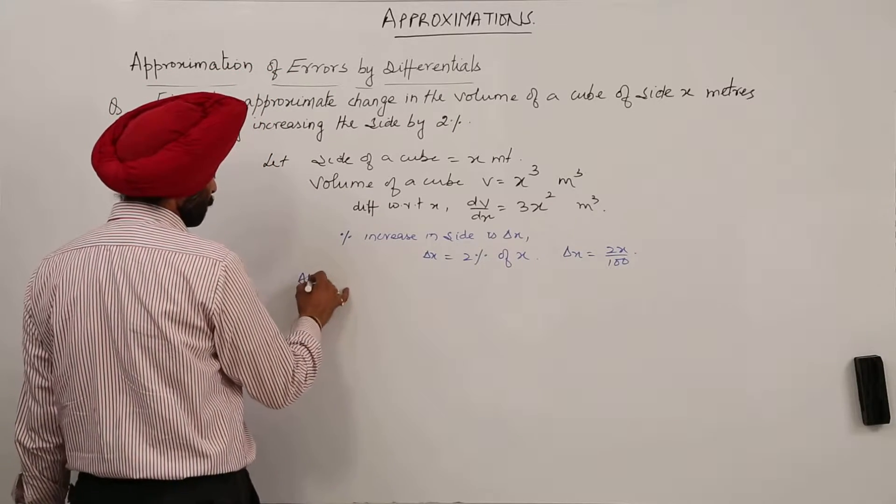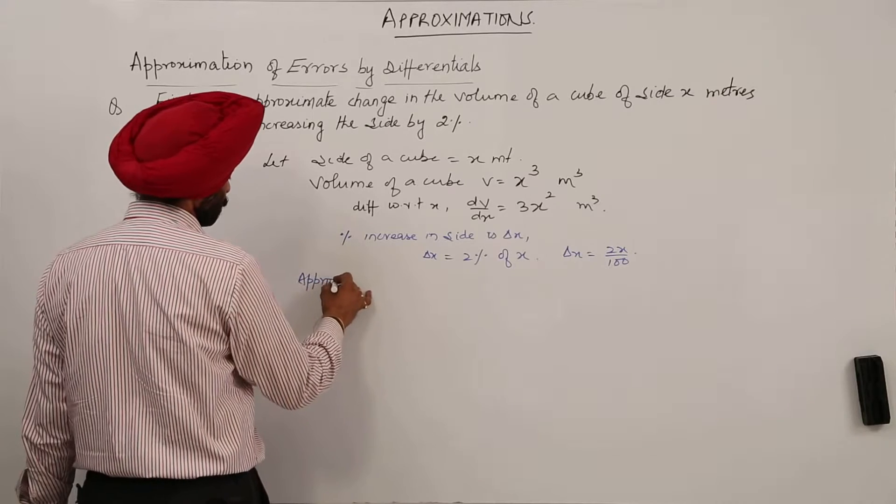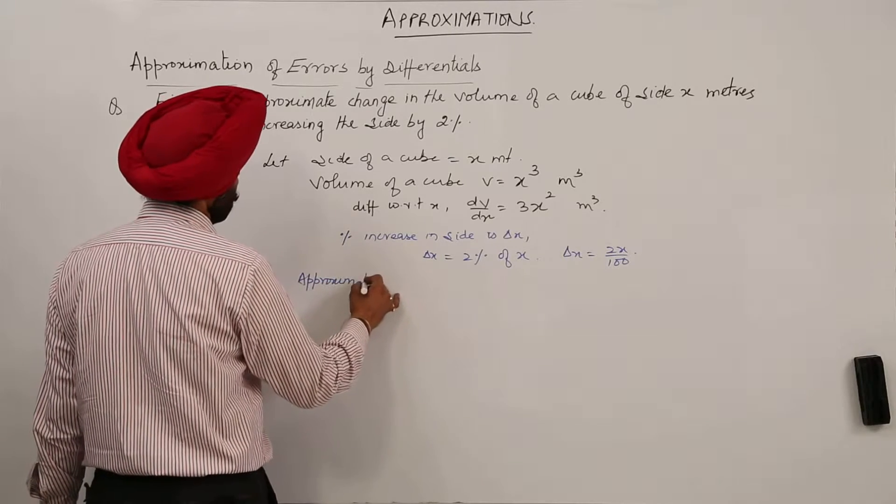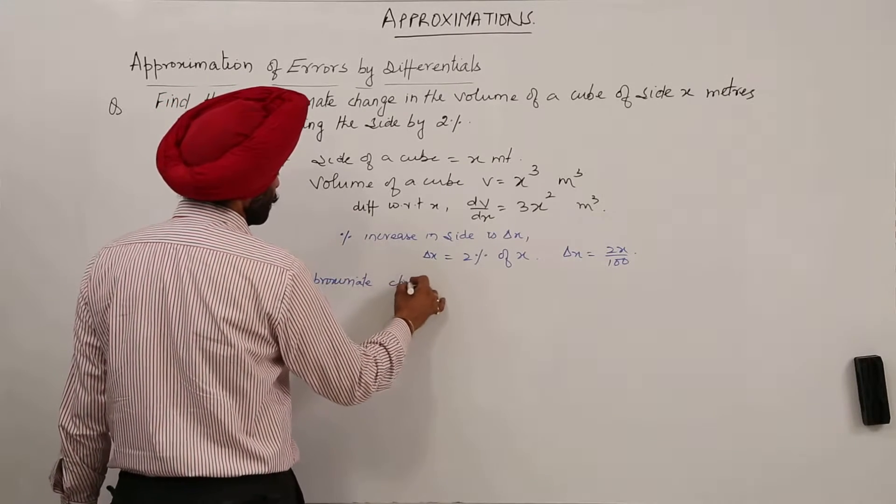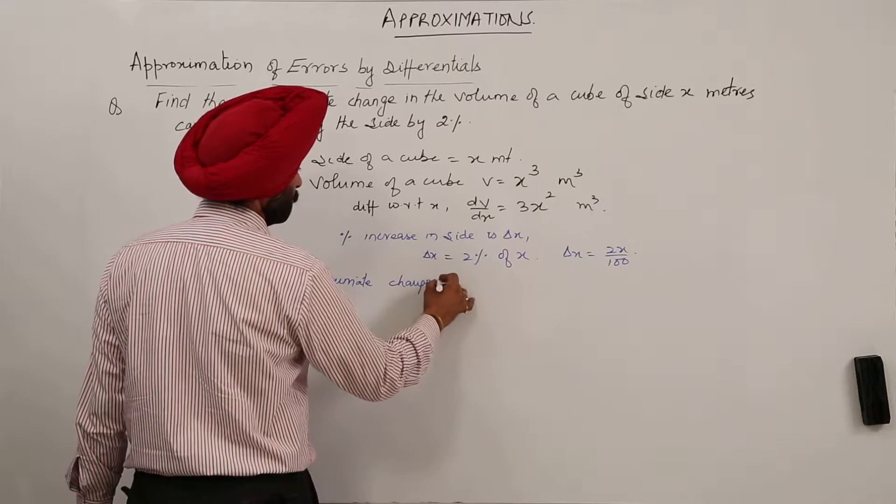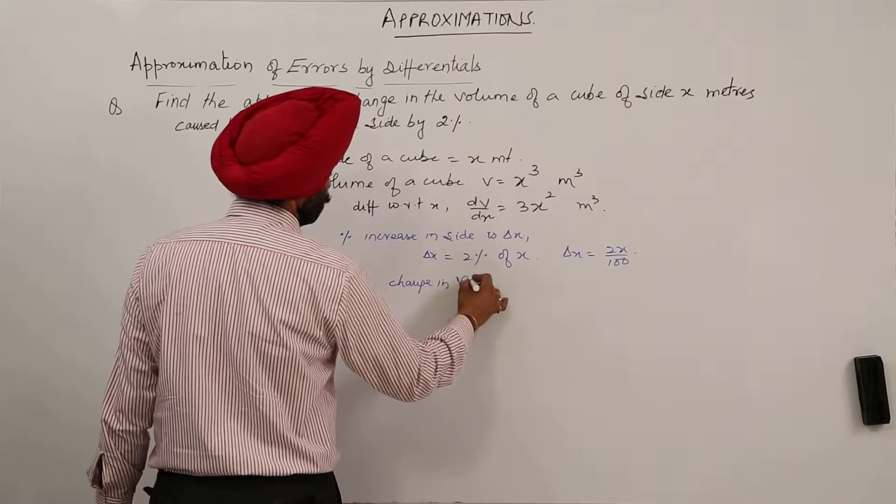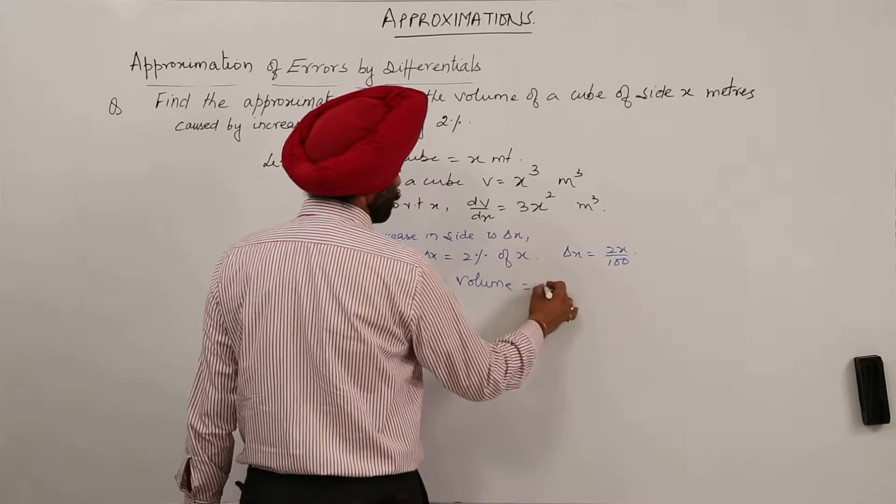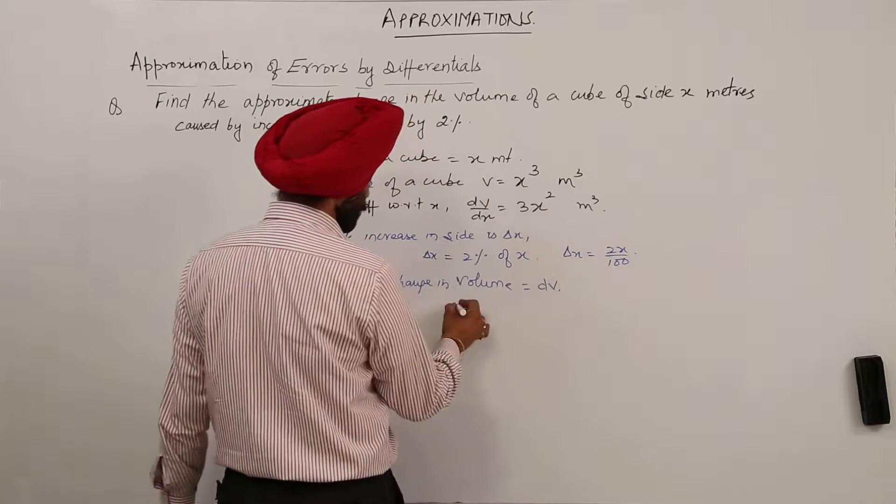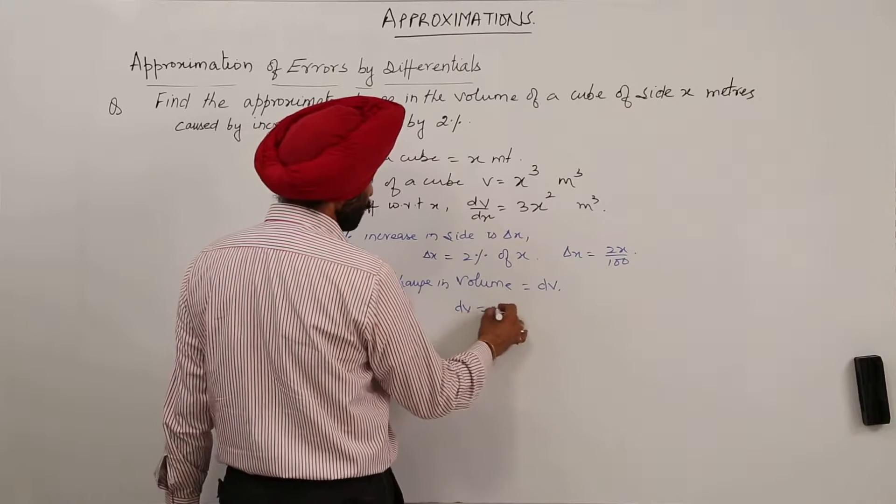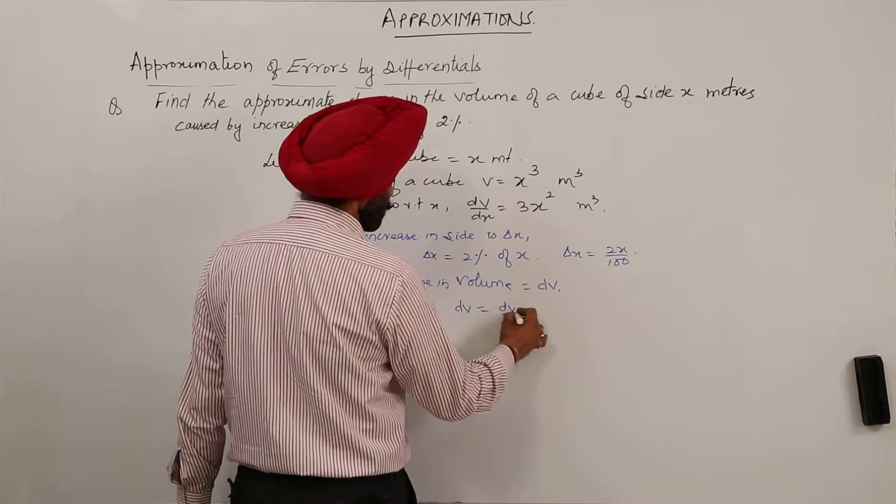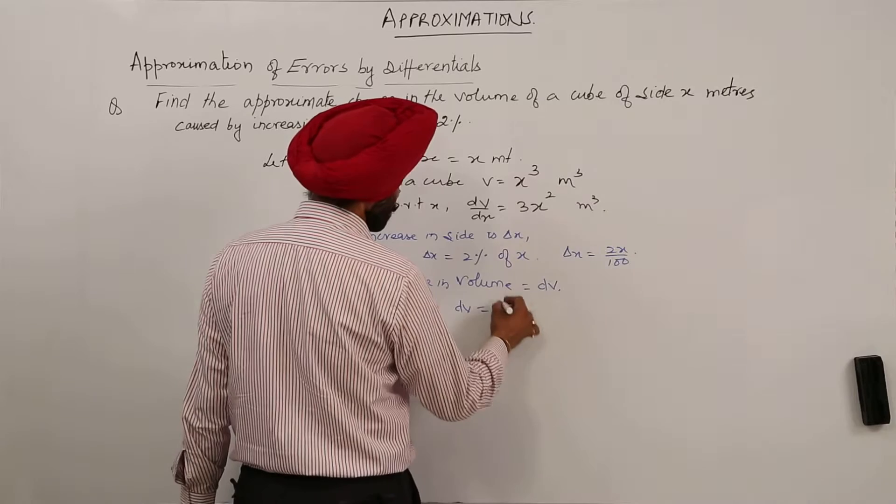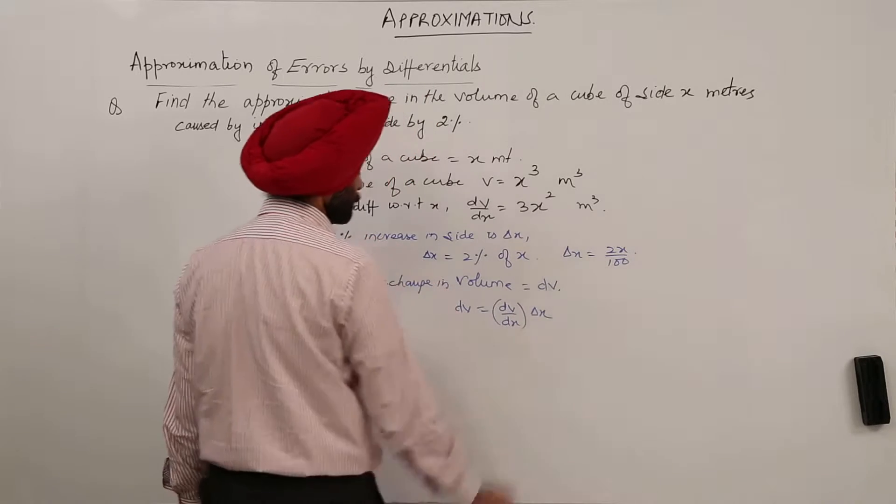approximate change in volume is equal to dv and now dv is equal to dv by dx into delta x.